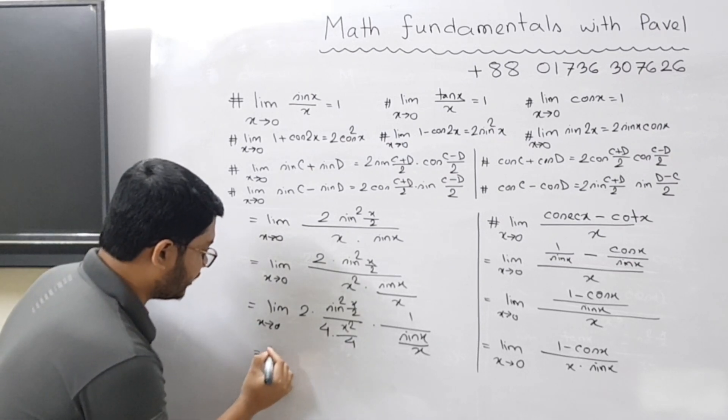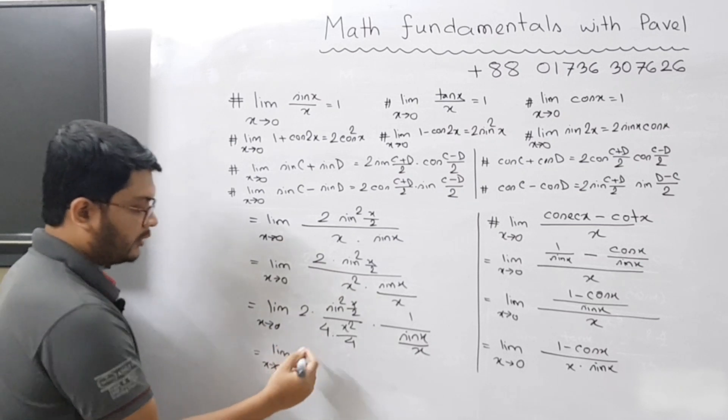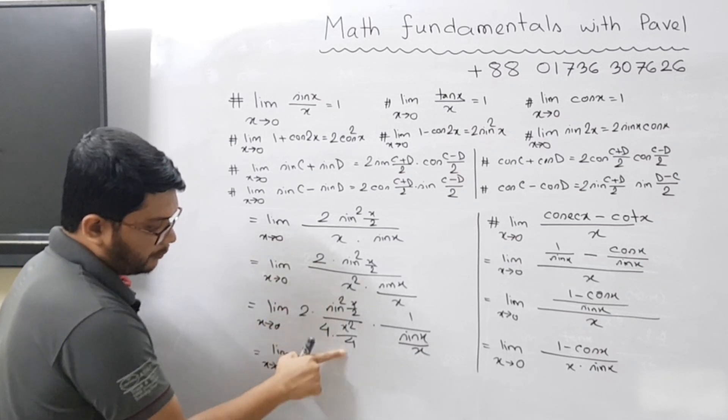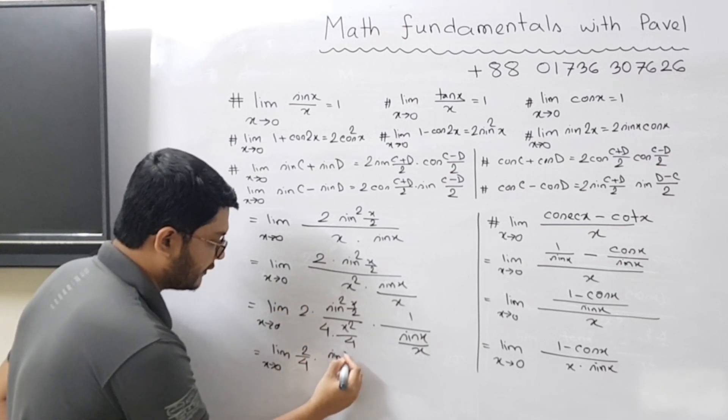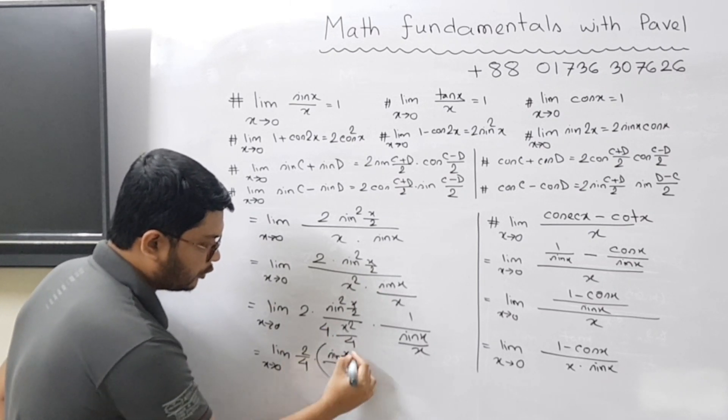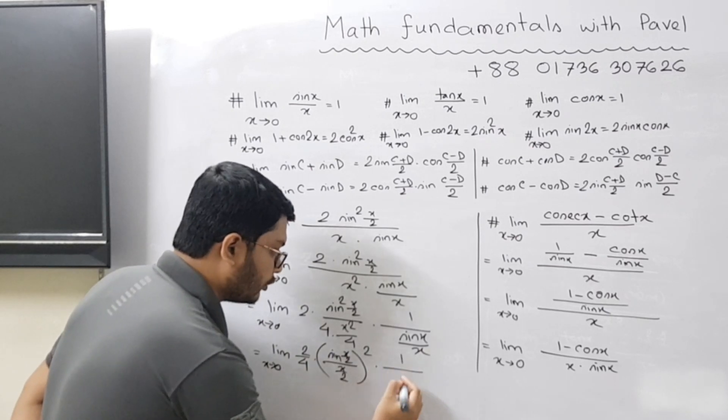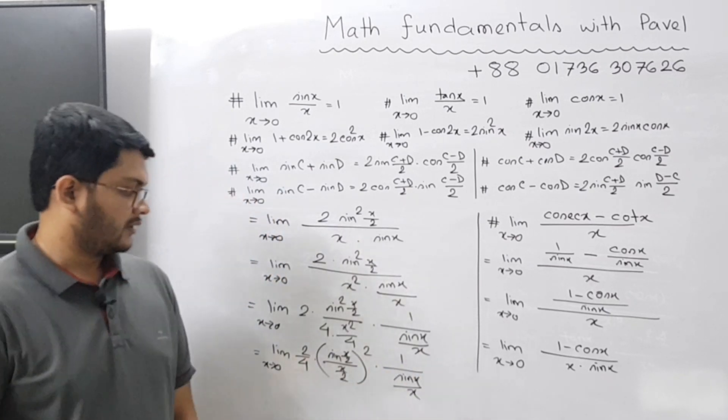In the next line, what you can do here is 2 by 4, you can write it as 2 by 4. And now you can combine this part. So it will become sin x by 2 divided by x by 2 whole square, multiplied by 1 divided by sin x by x.